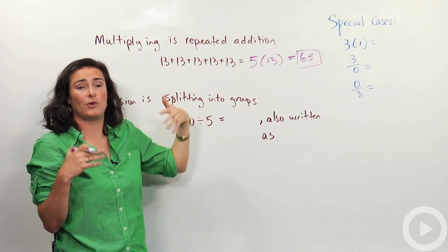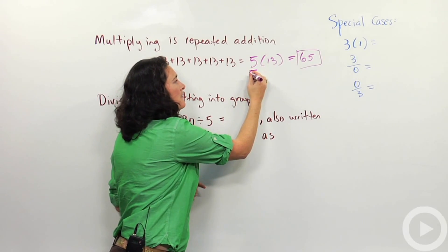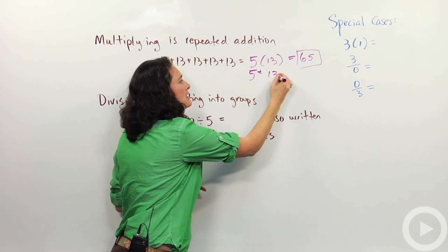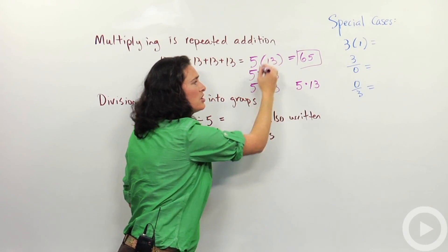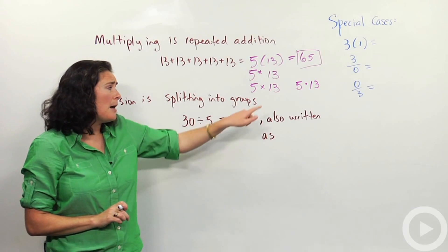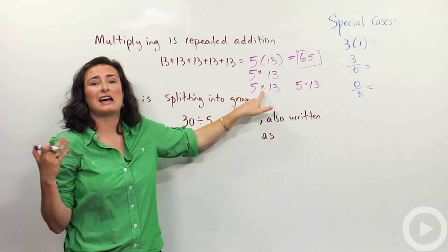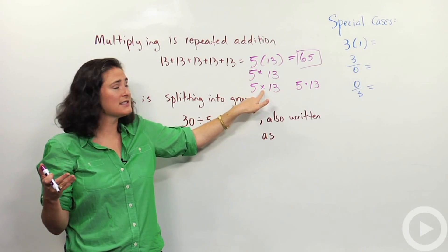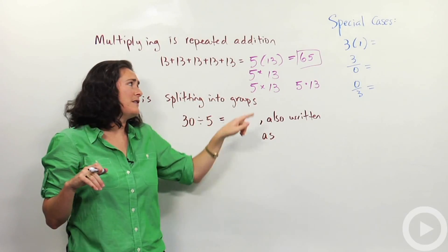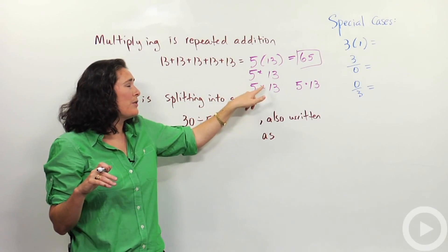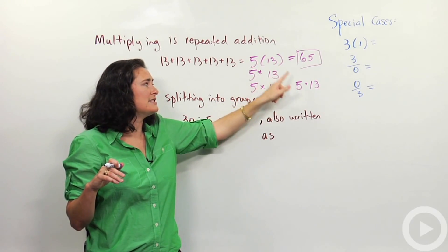Notationally — meaning the way we write stuff — I could write 5 parentheses 13, or 5 asterisk 13, or 5 × 13, or even 5 with a little dot 13. Those are all different ways to represent multiplication. The × symbol is one you might have seen before, but the problem is that later in math we start multiplying things by the letter x. So if I have 5 × x that would be confusing, or even x × x. That's why we usually use the parentheses or the little dot — those are the more common notations.